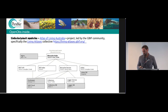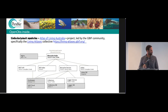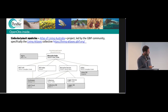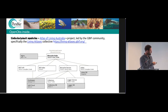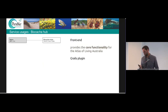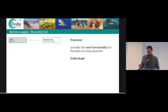To give a view of how the different components communicate: the Biocache Hub is the central front-end that displays the data, connected to the REST API, BIE Index, Biocache Service, and OData. The Biocache Hub is the front-end providing core functionality for the Atlas of Living Australia, and it comes as a Grails plugin.